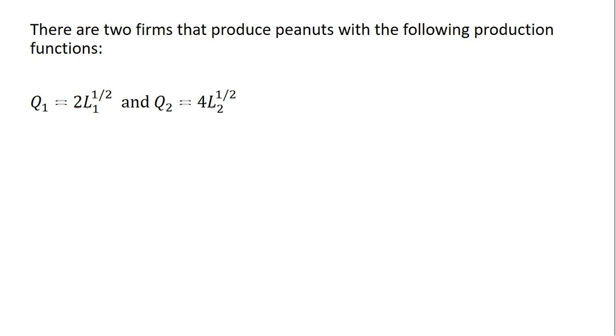We're going to start with an economy with two firms. There are two firms that produce peanuts with the following production functions. So firm one, that's what subscript one is representing, its output is going to be a function of units of labor. And firm two, likewise, its output will be a function of units of labor.